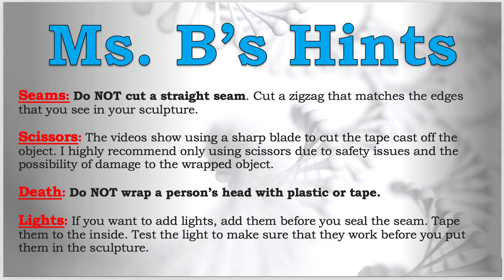If you want to add lights, add them before you seal the seam — tape them on the inside. You have to plan it ahead of time. You cannot create a project and then decide to put lights in it; you have to plan so the lights can be inside the project. Test the lights to make sure they work before you put them inside the sculpture.